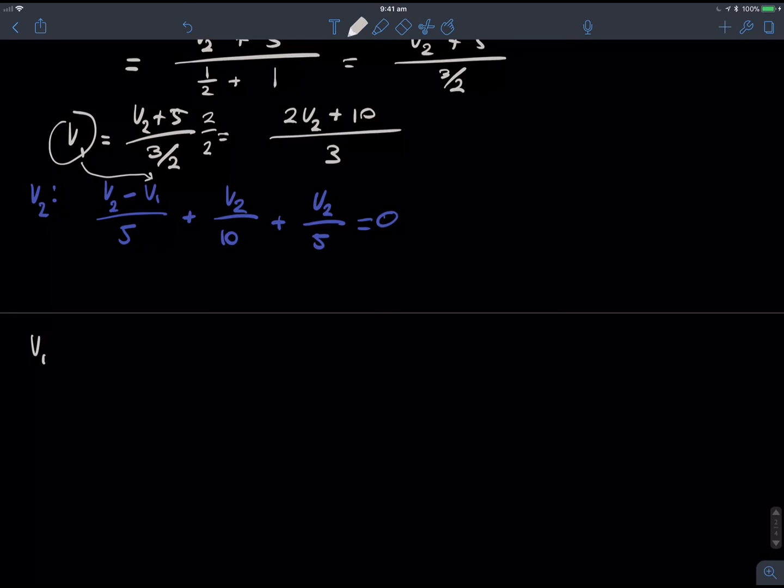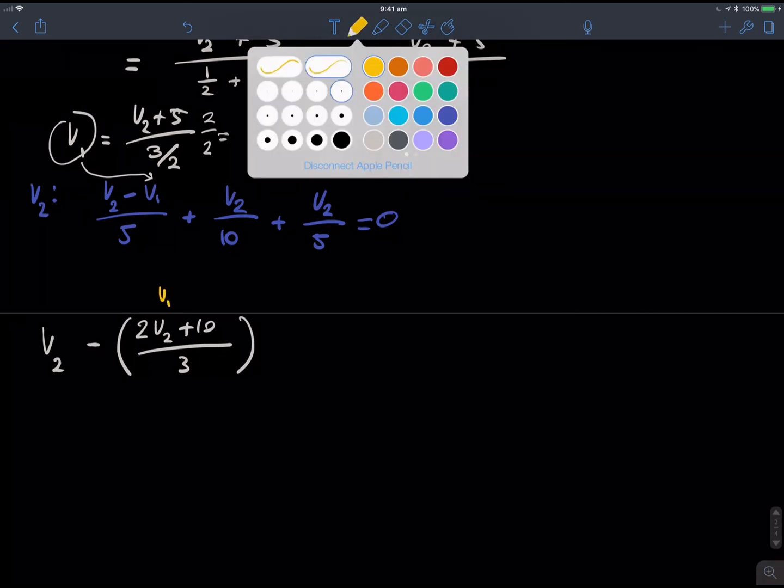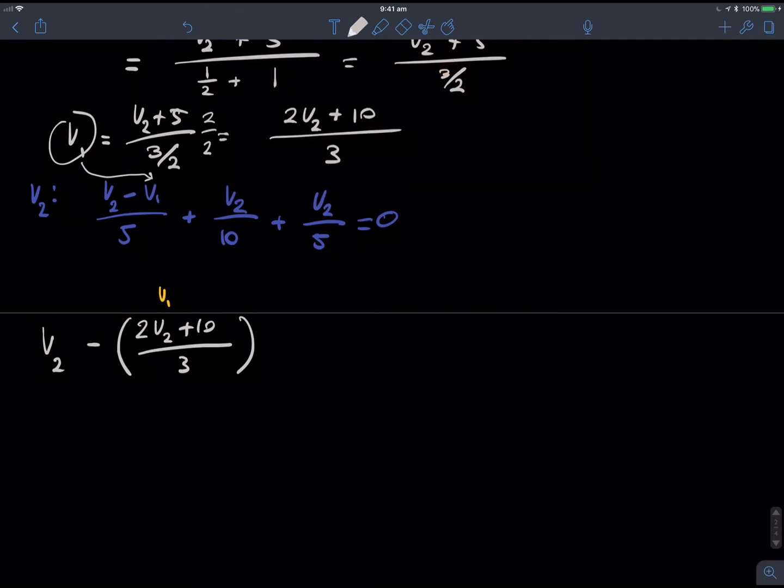So, we have V2 minus 2V2 plus 10 on 3, which is just our V1. Remember, I'll just add that in here. This is just effectively V1, but it's in terms of V2. And this just makes it so we have one equation with one variable that we can just solve for. Alright. So, now we just basically solve for V2, and we should get some sort of number.